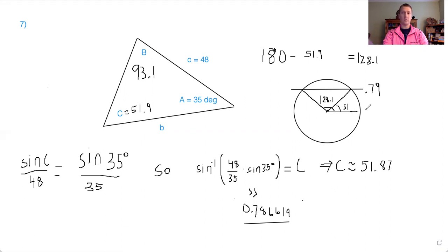So now we ask ourselves, is it possible to have another triangle where angle C is not 51.9, but it's 128.1? And we do this same game where we take 180, we subtract 128.1, and we subtract the 35 degree angle as well. Is that a positive angle? Because if it's a positive angle, that means we can force angle B to be that angle. Because angle B is still not known, and side B is not known.